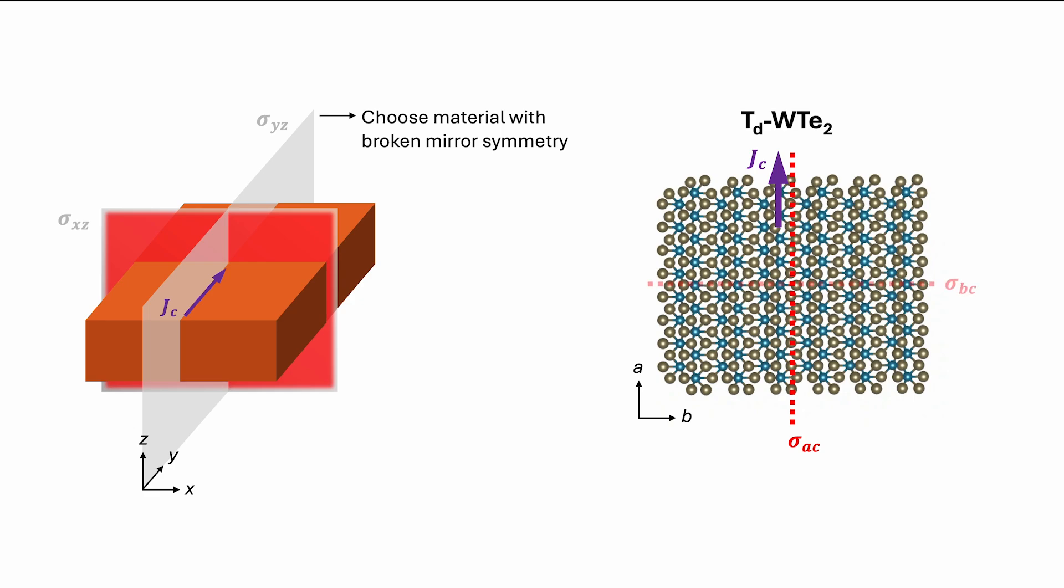This makes it possible to achieve out-of-plane spin components. It must also be noted that if current is instead applied along the B-axis, the BC mirror plane is still preserved and field-free switching using out-of-plane spin accumulation cannot be achieved.